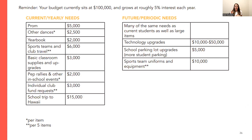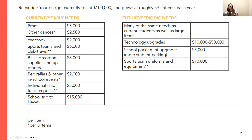On their budget menu, they have different items they might want to spend on and the cost of those items. Their budgets all start at $100,000 and they gain 5% interest each year. This is how much each thing costs — for example, prom is $5,000. Some items have an asterisk, meaning the cost is per item.